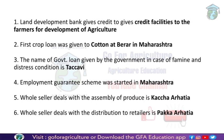Next: the Employment Guarantee Scheme was started in Maharashtra. Next: a wholesaler who deals with the assembly of producers is called Kaccha Arhatiya. Wholesalers are market agencies or functionaries. There are basically two types: Kaccha Arhatiya and Paka Arhatiya. Kaccha Arhatiya is the wholesaler who deals directly with the produce from farmers, while Paka Arhatiya distributes to retailers.